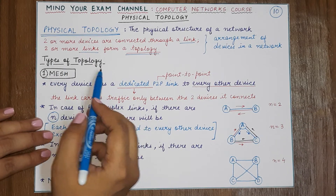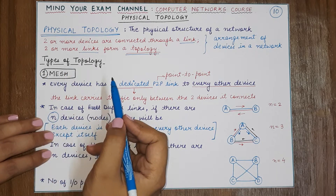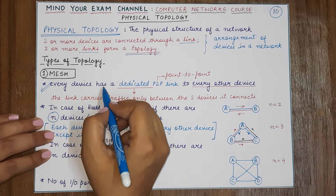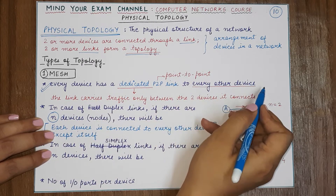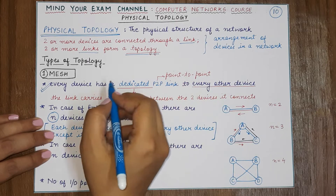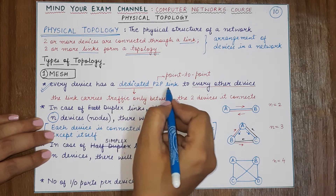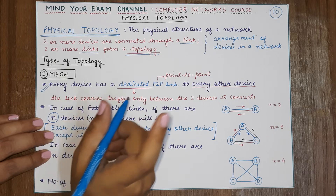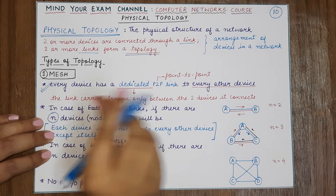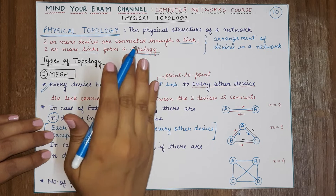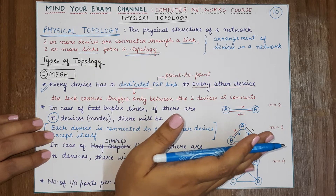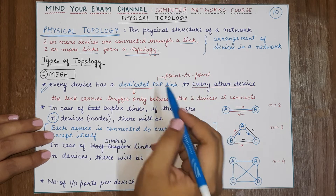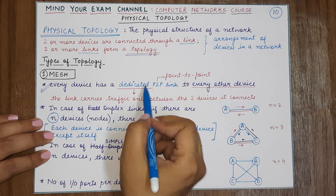Now coming to the types of topology, the first kind is the mesh topology. In the mesh topology, the most important point to remember is that every device is connected via direct link to every other device in the network. If the network is following a mesh topology then every device will have a dedicated point-to-point link to every other device. Dedicated means that the two devices sharing a particular link will only use that link for communication among themselves — it will not carry traffic for any other third device. So every device has a connection to every other device using point-to-point links.